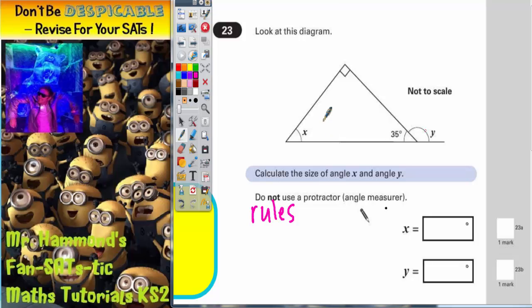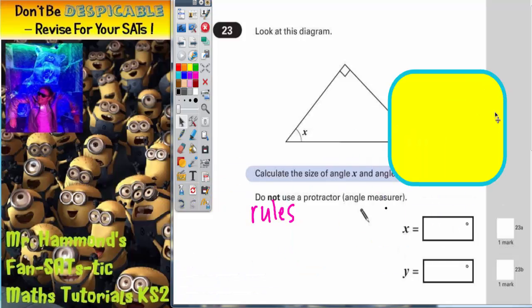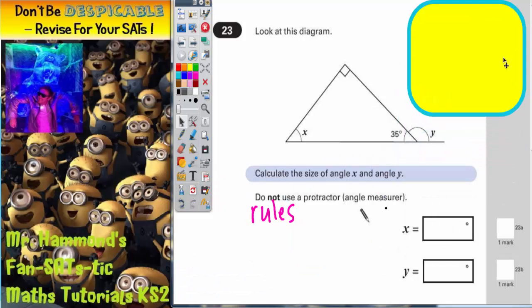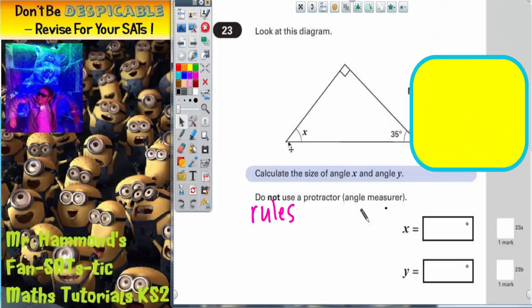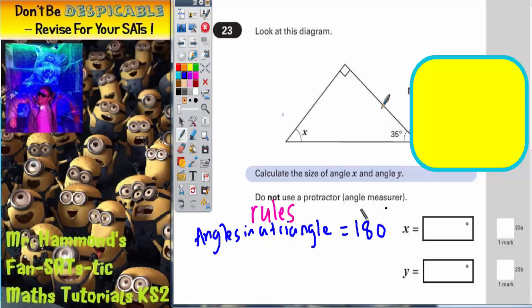Now what rules do we know about this diagram? Well first of all, I'm going to bring in a little piece of paper to cover something up. Now if I cover up this little bit on the corner here, you can see I've got a triangle left. Now what do we know about a triangle? Well, we know that angles in a triangle add up to 180. So these three angles must add up to 180. Now if you see a little square in the corner of an angle, that means it's 90 degrees. So that one is 90 degrees and we still need to find angle x.